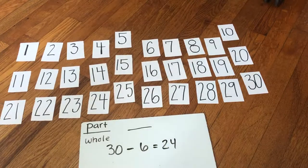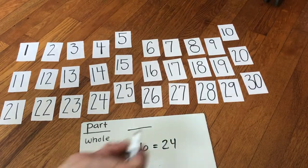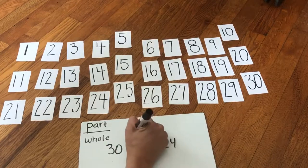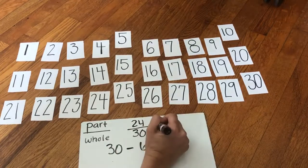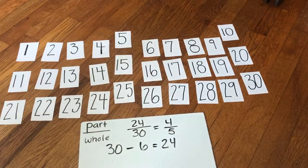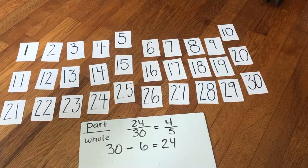There's 24 cards left over. So there are 24 chances for not a multiple of five out of 30, and I can simplify that down to four fifths. So my final answer for that one is four fifths.